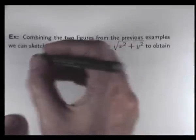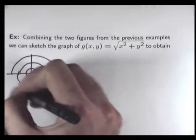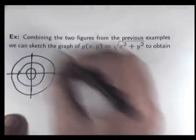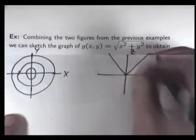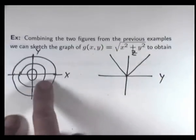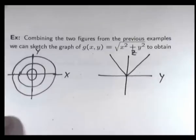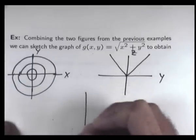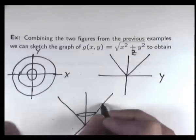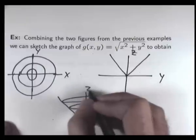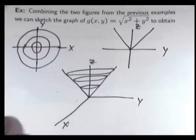Similarly, combining the level curves for G with the V-shaped sections — the contour curves lie above the XY plane and are bounded by the V-shaped curve — putting this all together we get something that looks like a cone.